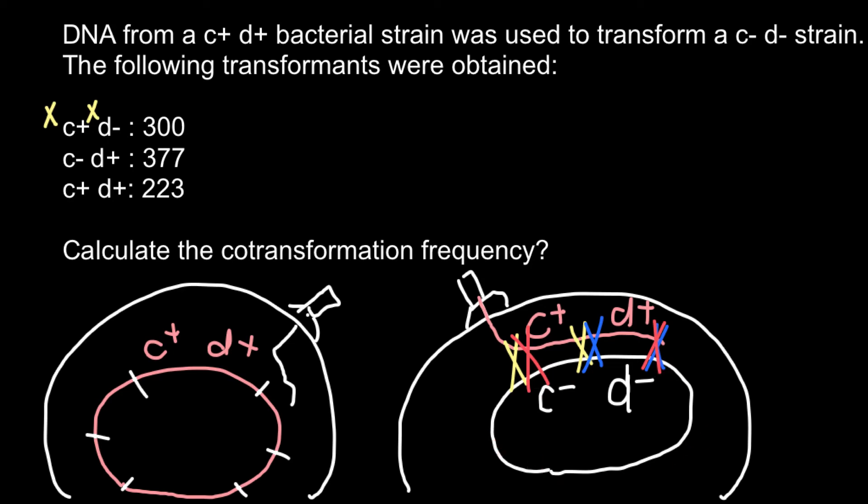In the second case, we see that crossing over happened between this place and this place. And D-positive allele has been incorporated instead of D-negative.